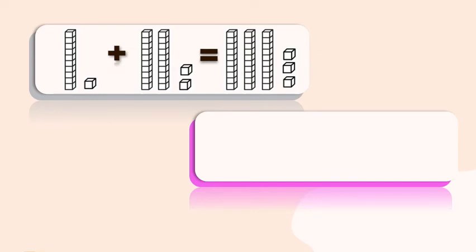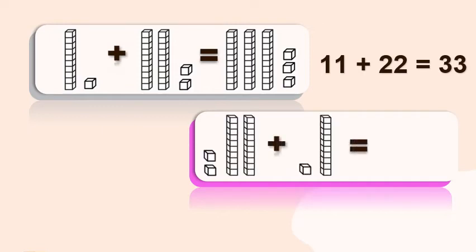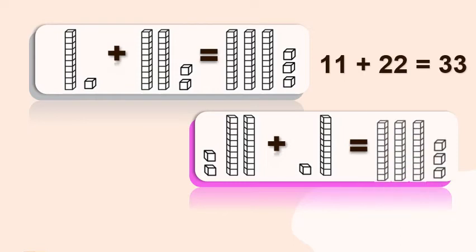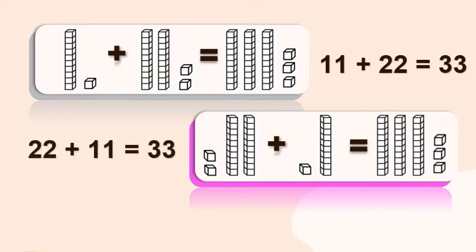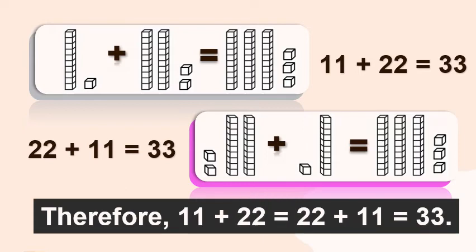One more example. We have here one ten and one one — eleven — plus two tens and two ones — twenty-two — is equal to three tens and three ones — thirty-three. In number sentence, eleven plus twenty-two is equal to thirty-three. Let's switch it: twenty-two plus eleven is equal to thirty-three. The same answer. Therefore, eleven plus twenty-two is equal to twenty-two plus eleven, both equaling thirty-three.